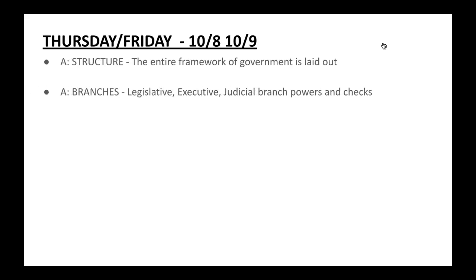First, the structured government was laid out in the Constitution. The entire framework of government is specified — all the different branches like the legislative, the executive, and the judicial — and also the system of checks and balances. These things in the earlier part of the Constitution laid the groundwork and framework for government to not only expand but assume power and to keep it.